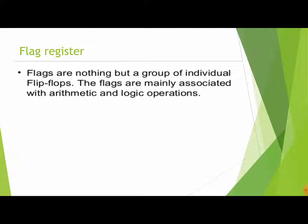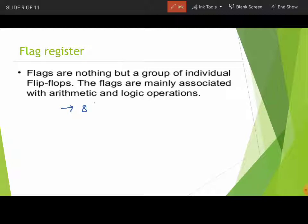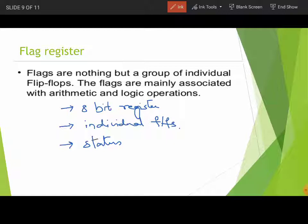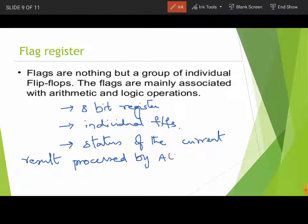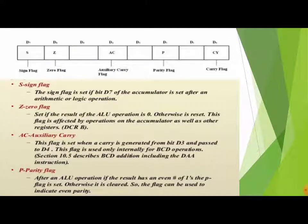Next is the flag register, which is a very important register. It is an 8-bit register in the 8085 and consists of individual flip-flops. The content of the flag register gives the status of the current result processed by the ALU. The flags are: sign flag, zero flag, auxiliary carry flag, parity flag, and carry flag. During any arithmetic or logical operation, if the result is negative or the D7 bit of the accumulator is set, the sign flag is set to one.